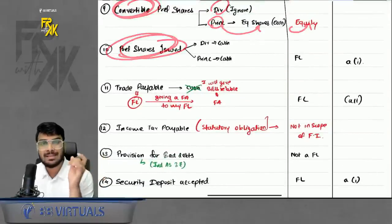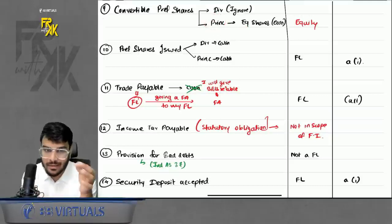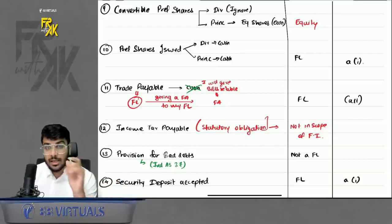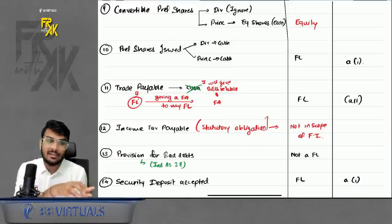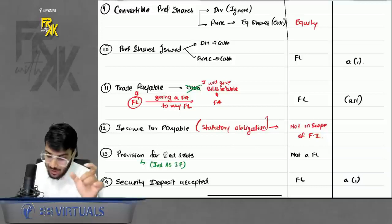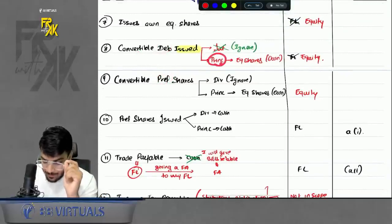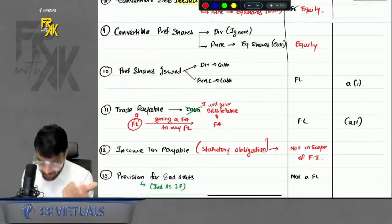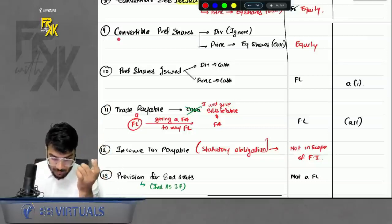For normal redeemable preference shares, since both dividend and principal are paid in cash, it is a financial liability. So the distinction is not equity vs. debenture as in older standards — under IND AS, substance over form applies. Check whether the instrument is convertible or redeemable: if the debenture is convertible (principal given in own equity shares), it can be equity; if it is a normal redeemable preference share (everything in cash), it is a financial liability. Depends entirely on whether it is convertible or redeemable.